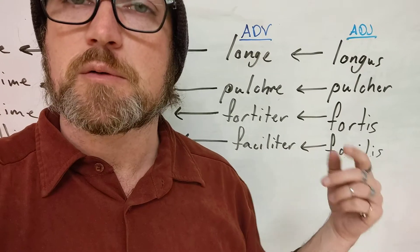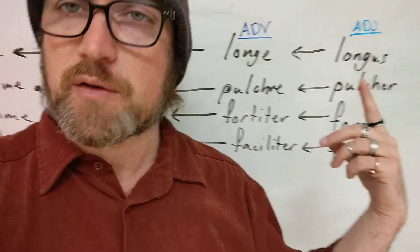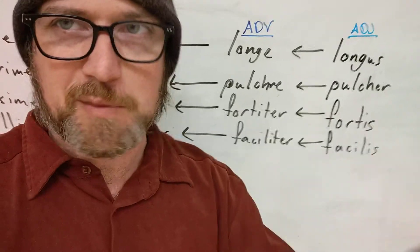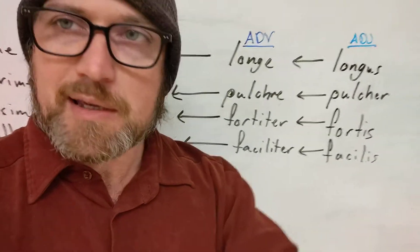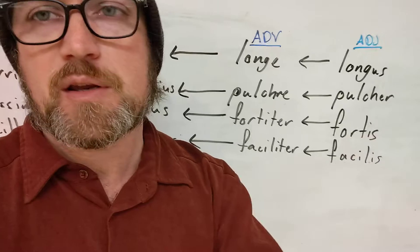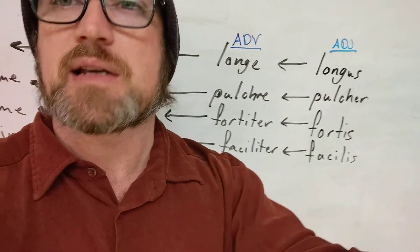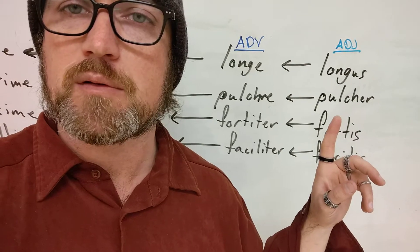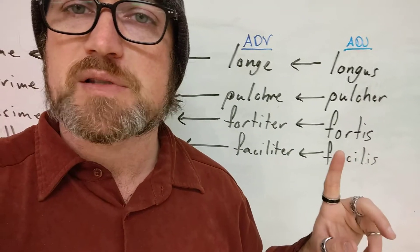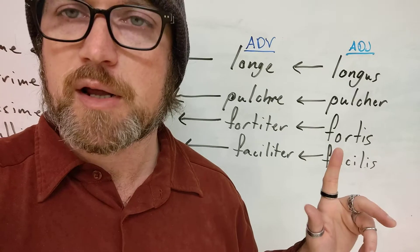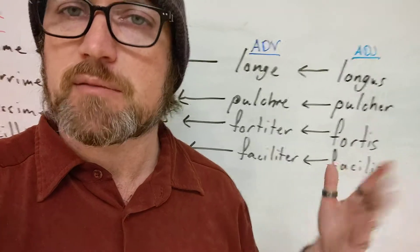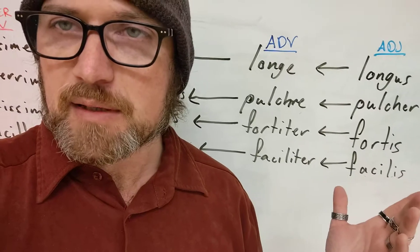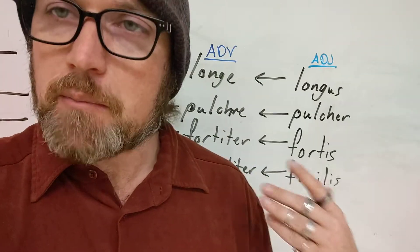So, you know, as opposed to something being long or tall, you can describe it as long-y, which is usually, contextually, like, means far away. Long-ly? You wouldn't really say that, but you know, you would talk about something distantly, which is often how it's used. Or, you know, where something can be beautiful, it can be done beautifully. Whereas somebody or something might be strong or brave, something could be done bravely, right? Something that is easy, you could also say things are done easily.